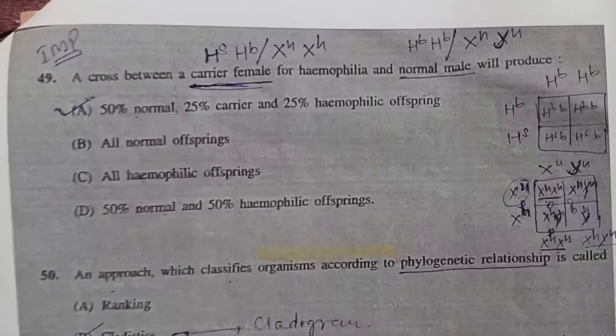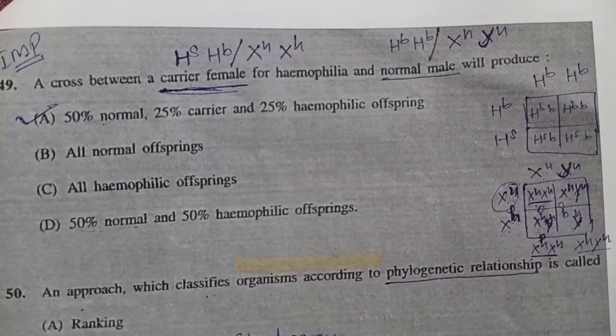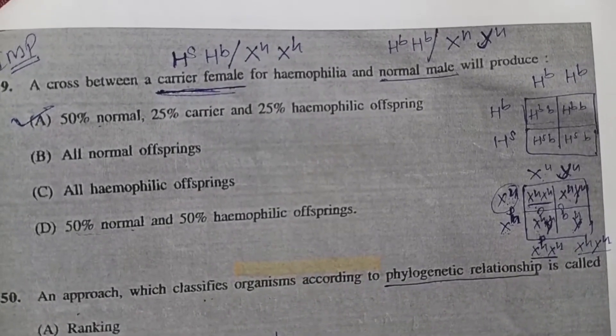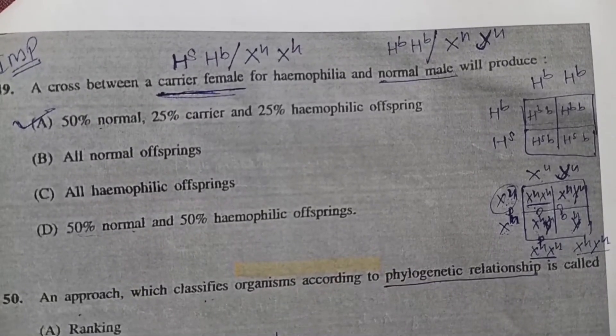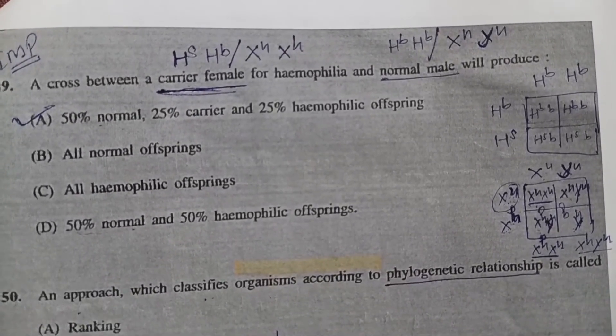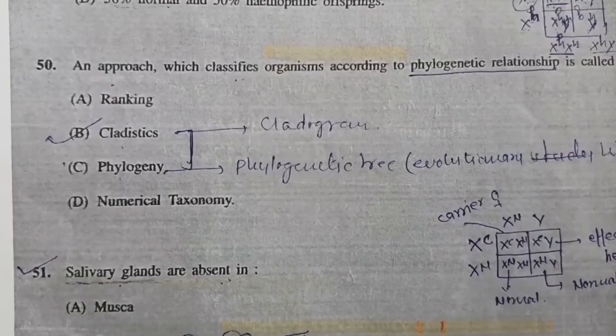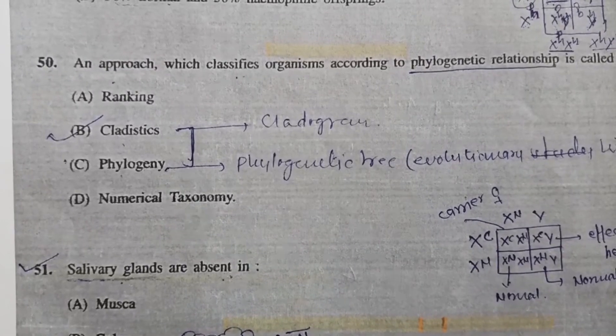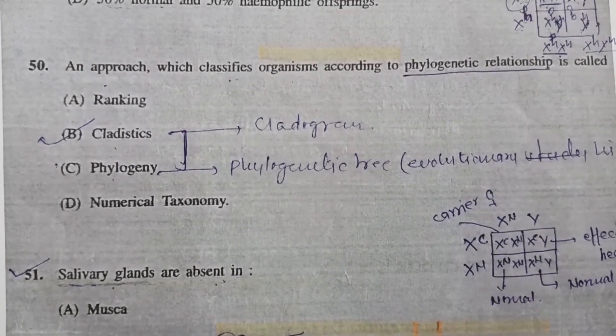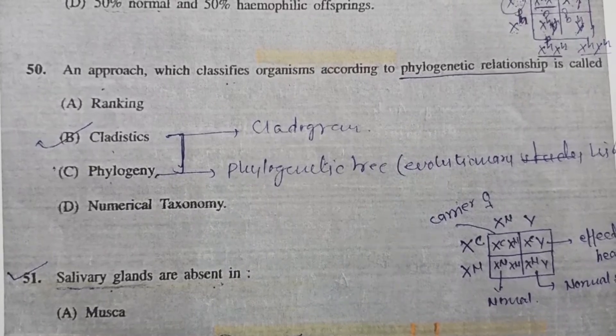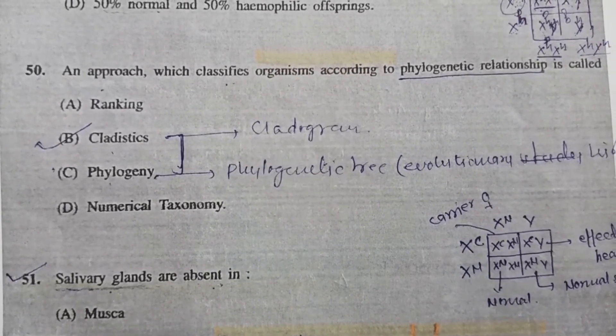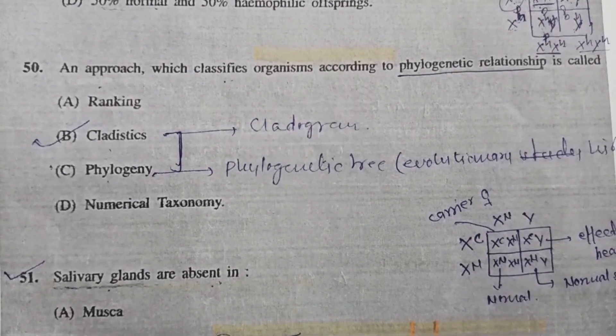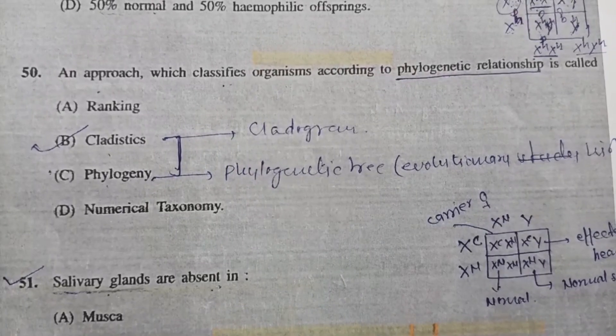Question 49: For hemophilia, a normal male will produce - Option A is correct: 50% normal, 25% carrier, and 25% hemophilic offspring. Question 50, the last question for this video: An approach which classifies organisms according to phylogenetic relationship is called - Option B, cladistics. Thank you for watching. Please subscribe, like the video, and wait for the next video.